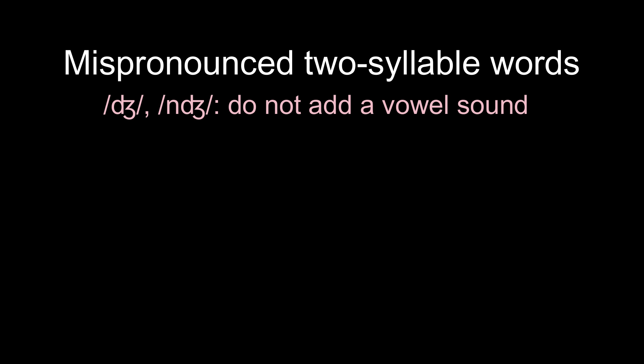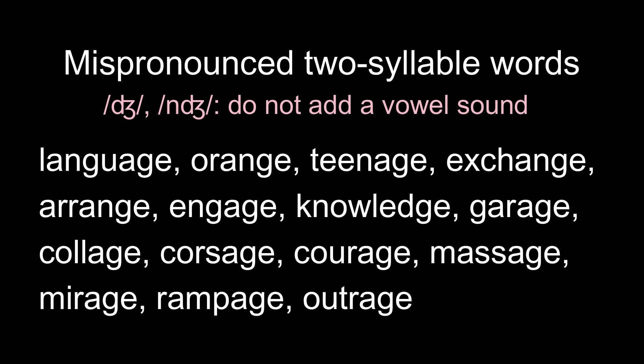Mispronounced two-syllable words. Mispronounced two-syllable words by adding a vowel sound at the end, making another syllable. But we should not add a vowel sound at the end. The following words are two-syllable words: collage, corsage, courage, massage, mirage, rampage, outrage.